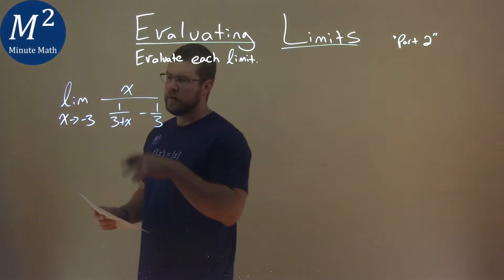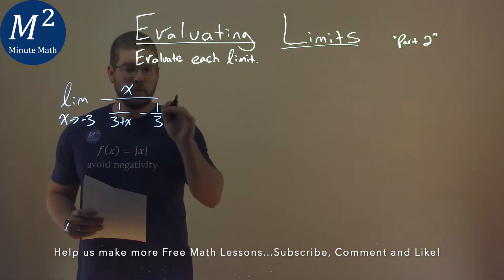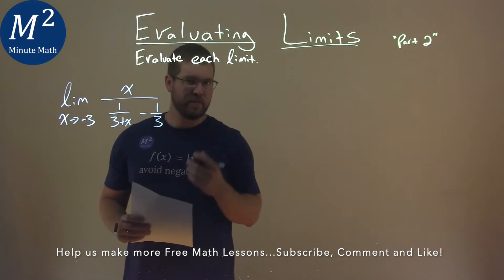We're given this problem right here: the limit as x approaches negative 3 of x over 1 over (3 plus x) minus 1 third, and we have to find this limit.